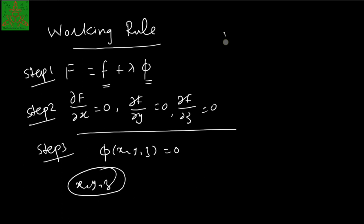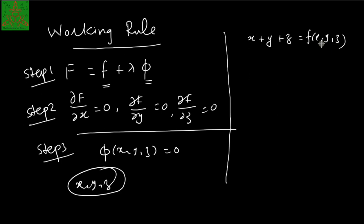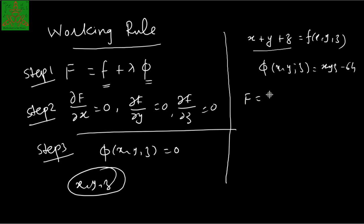For example, in the problem started at the beginning of this video, we need to calculate the function f(x, y, z) = x + y + z because we need to find three positive integers whose sum is minimum and whose product is 64. So the sum is our function f and phi(x, y, z) = xyz − 64, since the product is 64. Following the working rule, we define F = f + lambda*phi = x + y + z + lambda(xyz − 64).